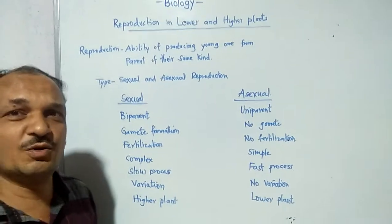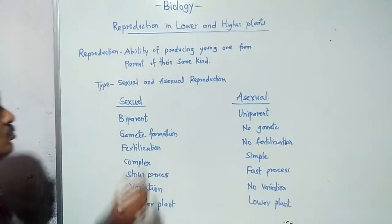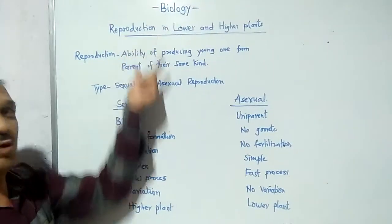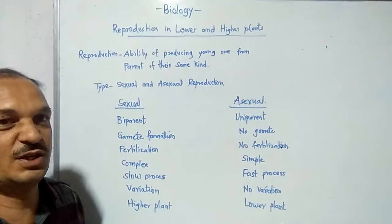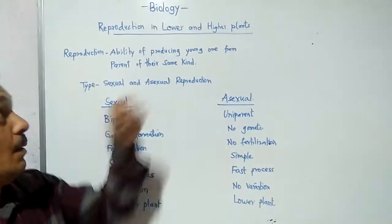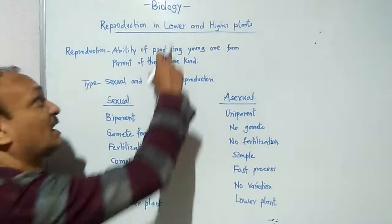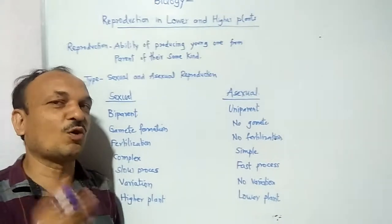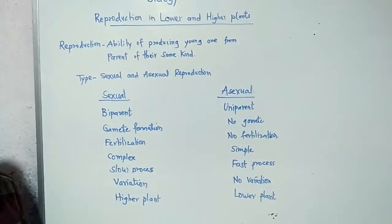Our first topic in the 12th examination is reproduction in lower and higher plants. You know very well about reproduction — producing a young one. Lower plants generally have non-vascular plants, and higher plants means they have vascular plants.